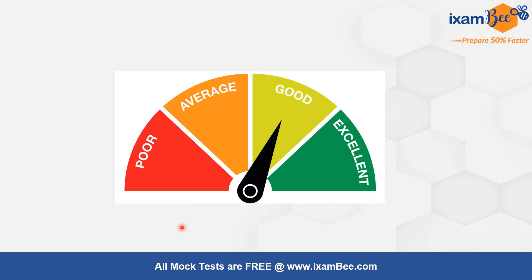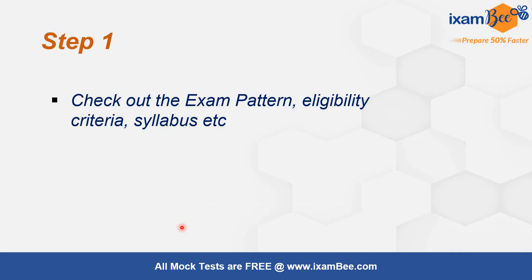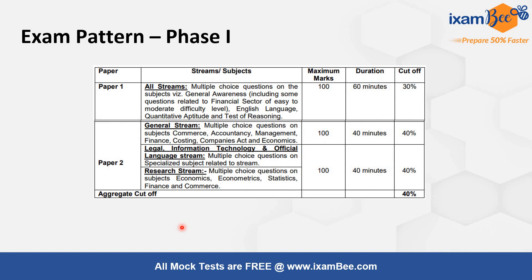Since you are here, you are willing to appear for the SEBI Grade A Legal exam. Step one in this self-assessment is to check out the exam pattern, eligibility criteria, and syllabus. There are two phases, and in both phases there are two papers. Paper one in Phase 1 covers Quant, Reasoning, English, and General Awareness — 100 marks total, 20 questions per section of 25 marks each, each question worth 1.25 marks. Minimum 30 marks are required.